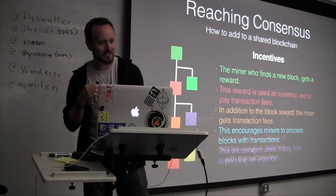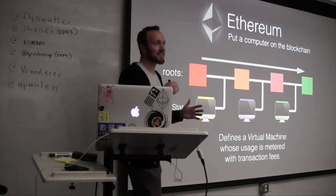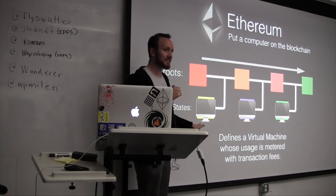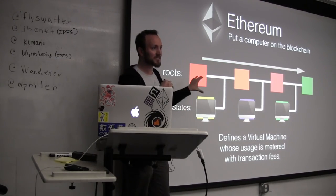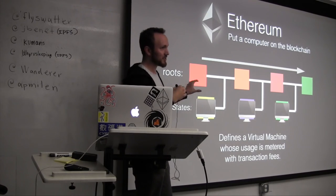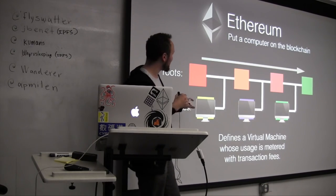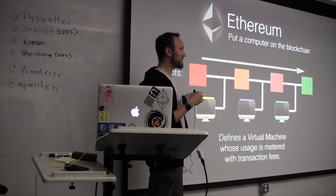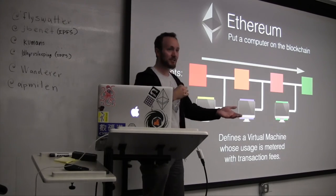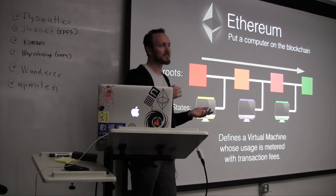Part of the point of these distributed systems is preventing any one source of power from getting to decide the final order, because that would just be too much power. The miners, of course, get an incentive to do this — every time a miner successfully makes a correct block, they get some Bitcoins, or in Ether they get some Ether rewards. So what's Ether? Ether's the same thing, but instead of a list of transactions at a time, we're taking a whole computer's state — it's this whole virtual computer space.